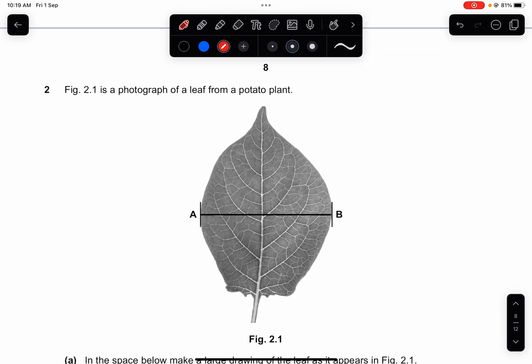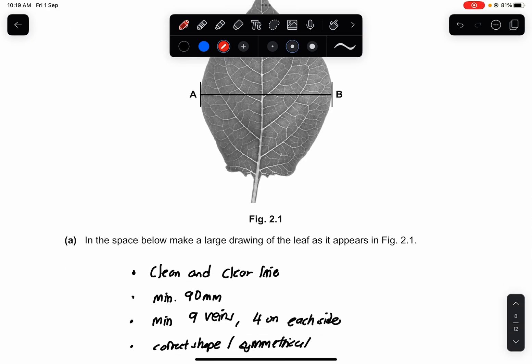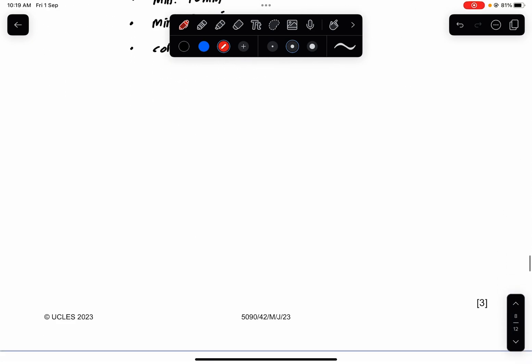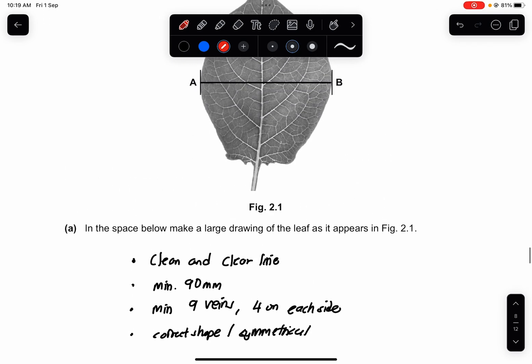Question 2. Figure 2.1 is a photograph of a leaf from a potato plant. In the space below, make a large drawing of the leaf as it appears in Figure 2.1. So it's 3 marks. What they're asking you to do is to make sure you have clear and clean continuous lines. Minimum 19mm in length of your drawing. 9 veins on minimum, 4 on each side. And make sure it's symmetrical and it has a correct shape.